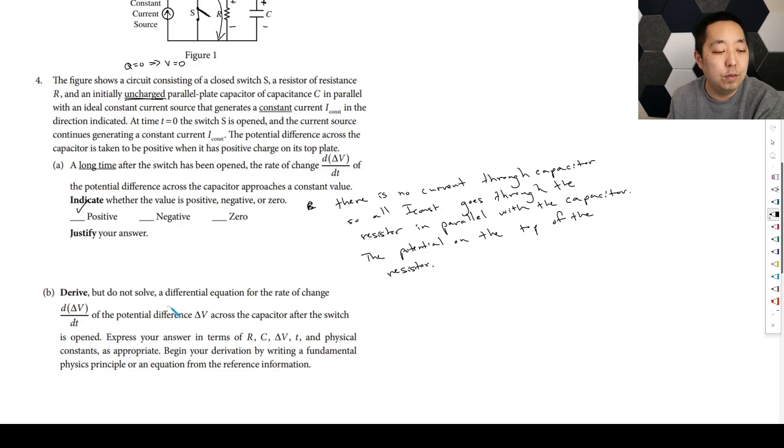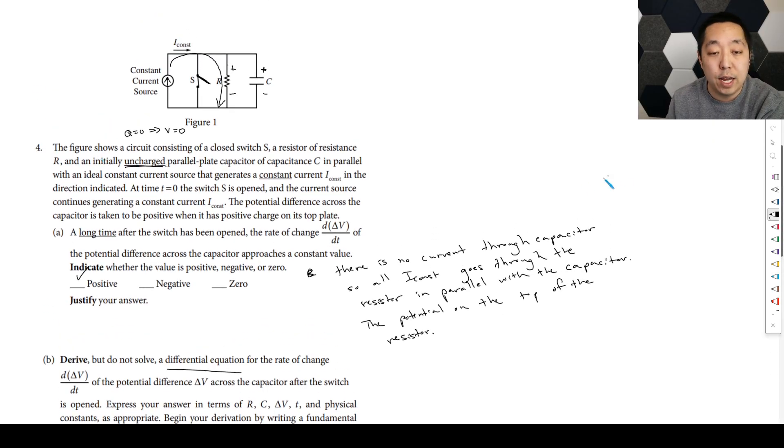Okay, derive but do not solve a differential equation for the rate of change of the potential difference on the capacitor after the switch is opened. Okay, so now we've opened it. And we want to express your answers in terms of what's the differential equation. So now you've waited, it was closed for a long time. So there's no current now it's uncharged. And so now we have this situation here.